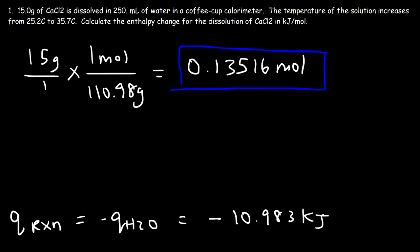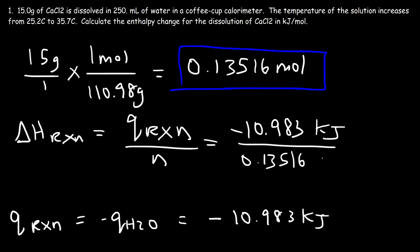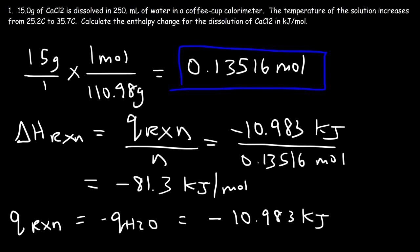The last step is to calculate delta H, which equals Q of the reaction divided by the number of moles. That's negative 10.983 kilojoules divided by 0.13516 moles, giving an answer of negative 81.3 kilojoules per mole. That is the enthalpy change of this reaction based on the data we were given.